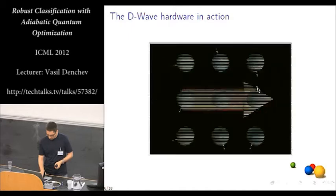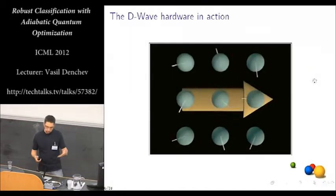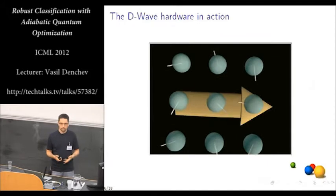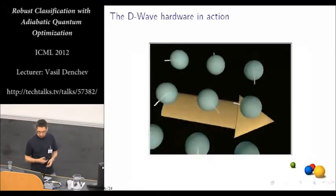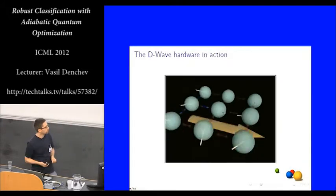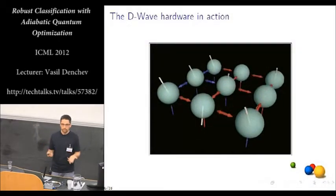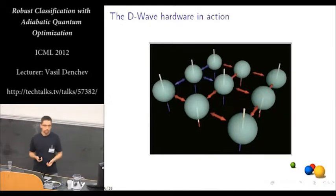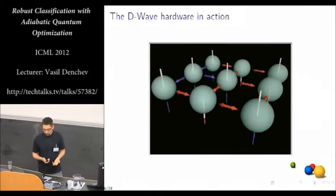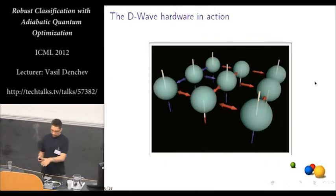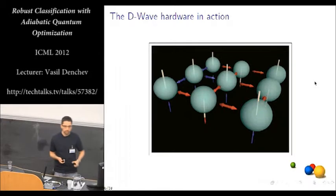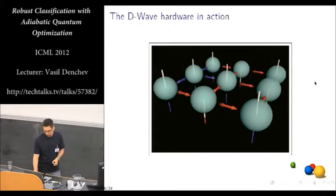So first we start the system into the beginning Hamiltonian, which is basically a transverse magnetic field that puts all the qubits in a superposition in their computational basis. And then we gradually turn off the magnetic field and turn on the couplings and biases that define the problem Hamiltonian. And then at the end of the quantum evolution, if everything has gone well, if we have stayed in the ground state of the system, the final state of the qubits is supposed to encode the solution to our optimization problem defined by the couplings and biases of the Ising model.